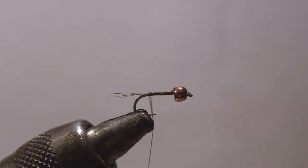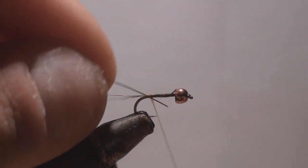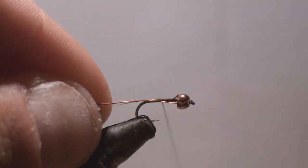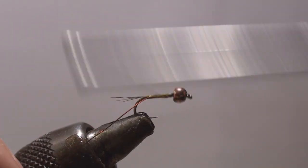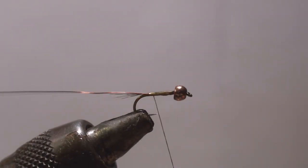Now for the ribbing, I'm going to use copper brown wire. You can use copper, whatever color wire you want to use. It's up to you, I just like this color here.